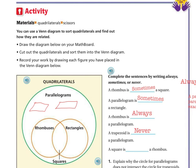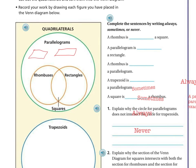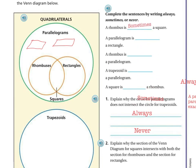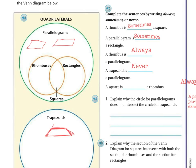And a trapezoid is never a parallelogram. And the reason it's never a parallelogram is because, remember, the trapezoid has only one set of parallel sides. This one and this one. But these two sides are going to intersect at some point. And then a square is always a rhombus.